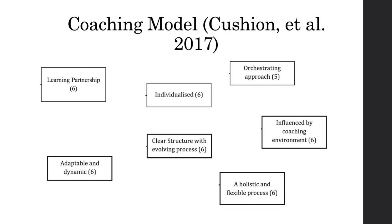The fourth principle is the influence caused by the coaching environment. Within this principle, the coaching process can be influenced by who is being coached, what is being coached, or the organization the coaching is for. Principle 6 requires a holistic and flexible process to deal with the complexity of the coaching process and its inherent messiness — the process needs to be considered holistically. As for the final principle, the coach's approach must be adaptable and dynamic, due to changes in the athlete's environment and constraints.